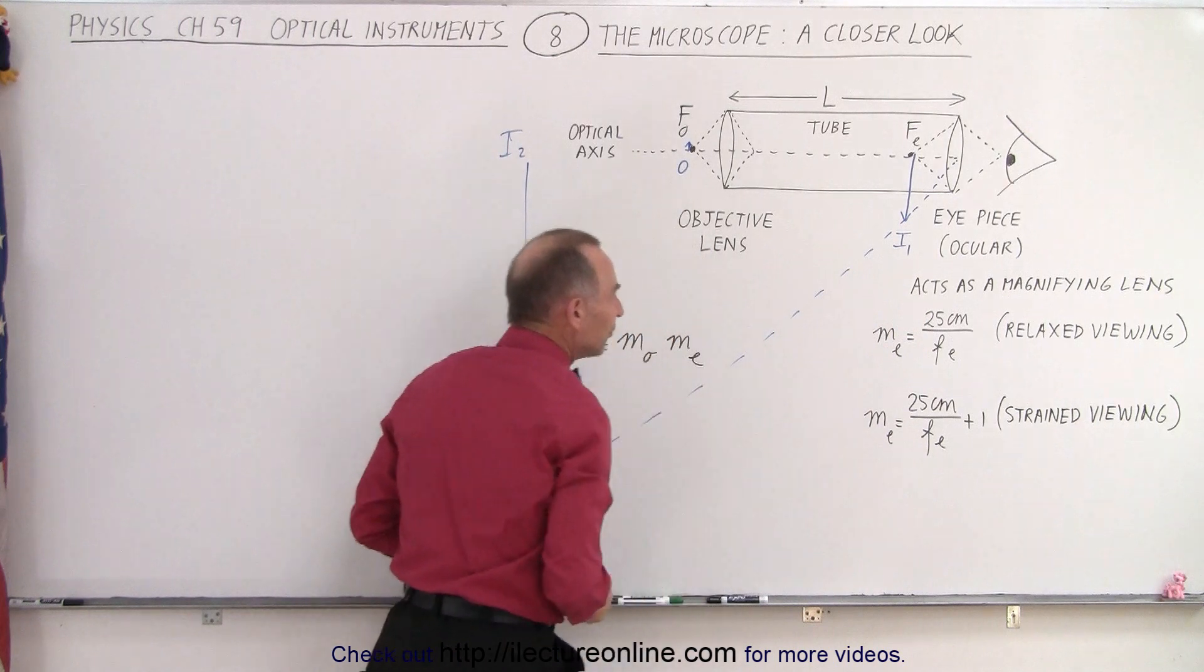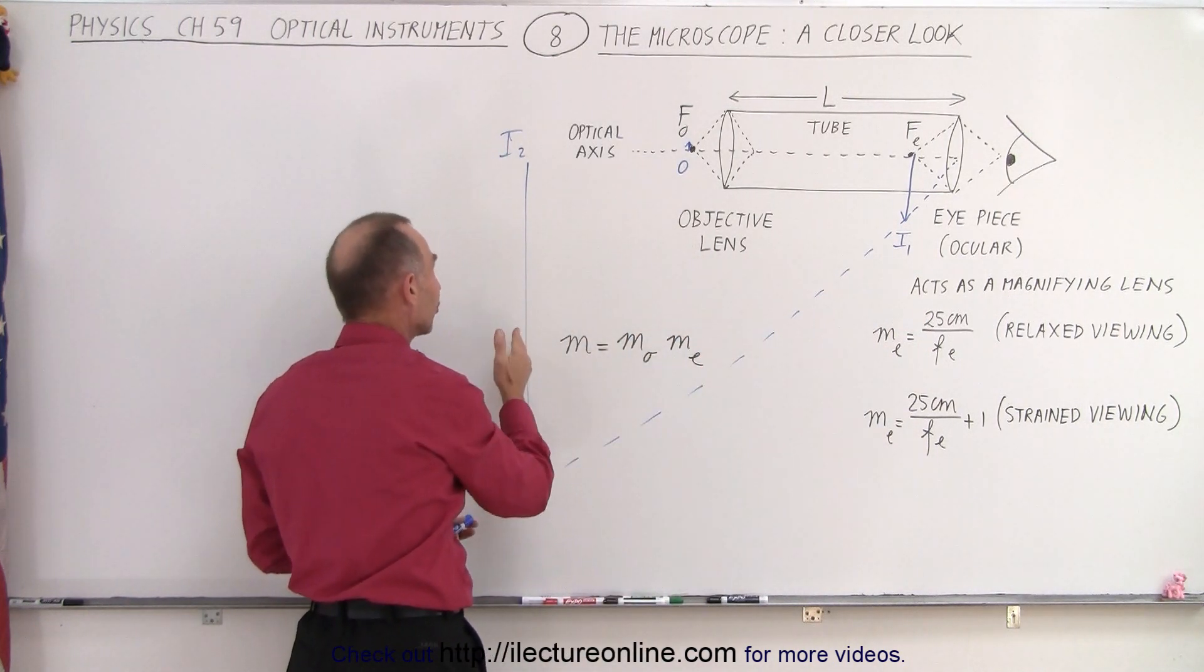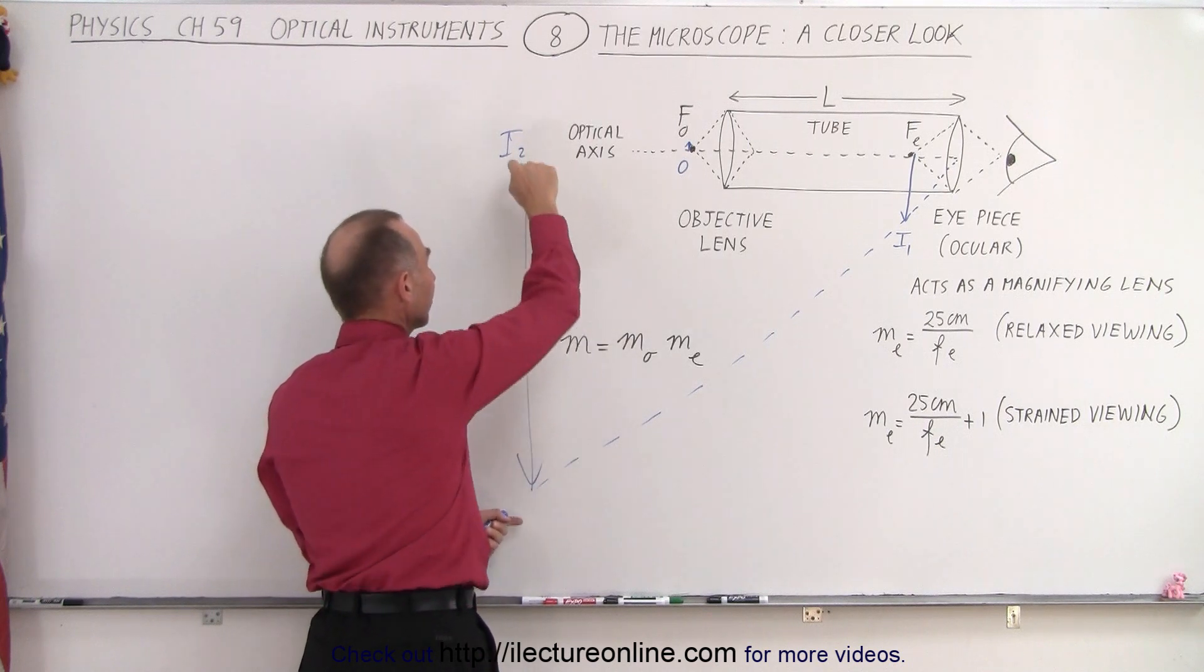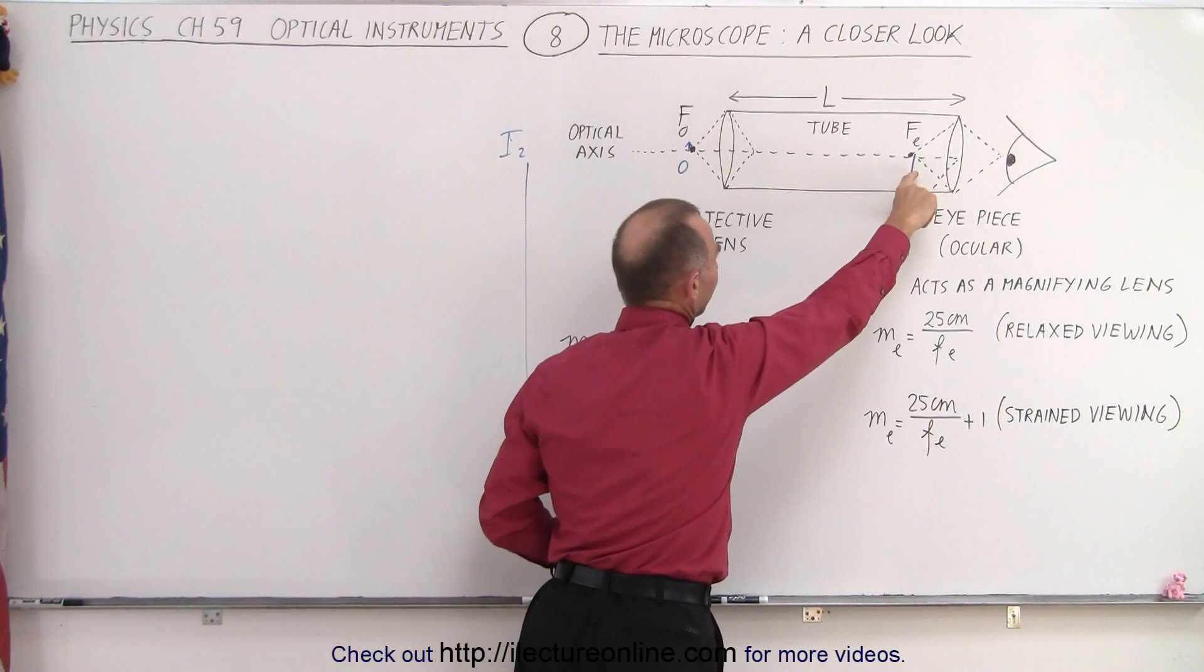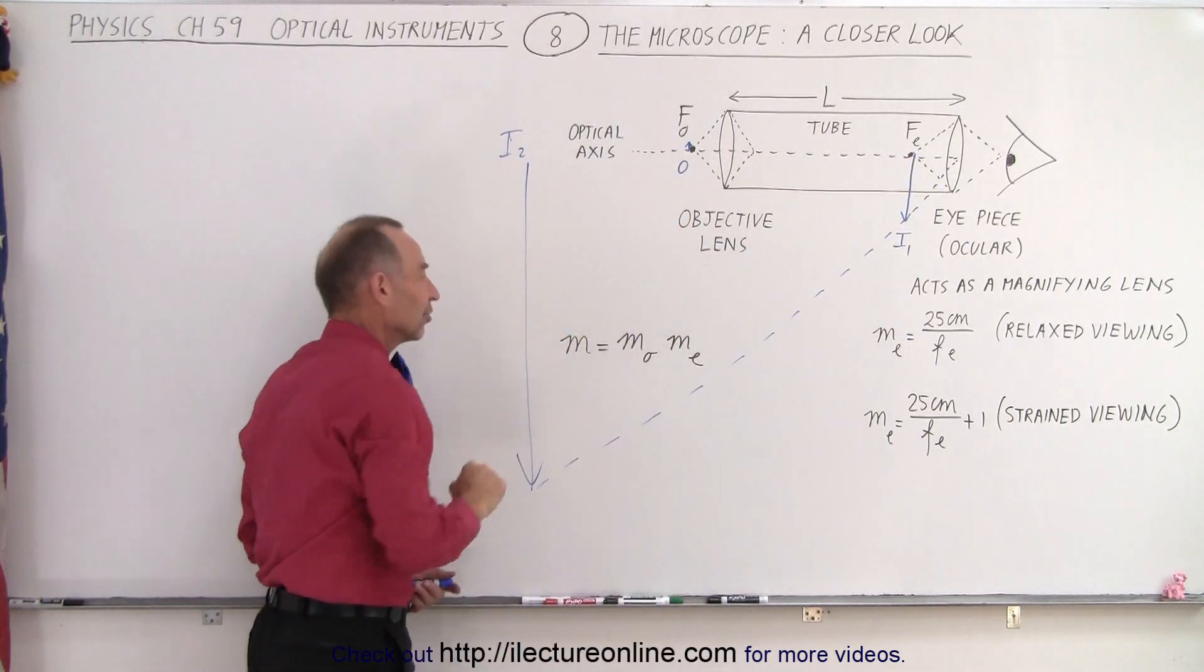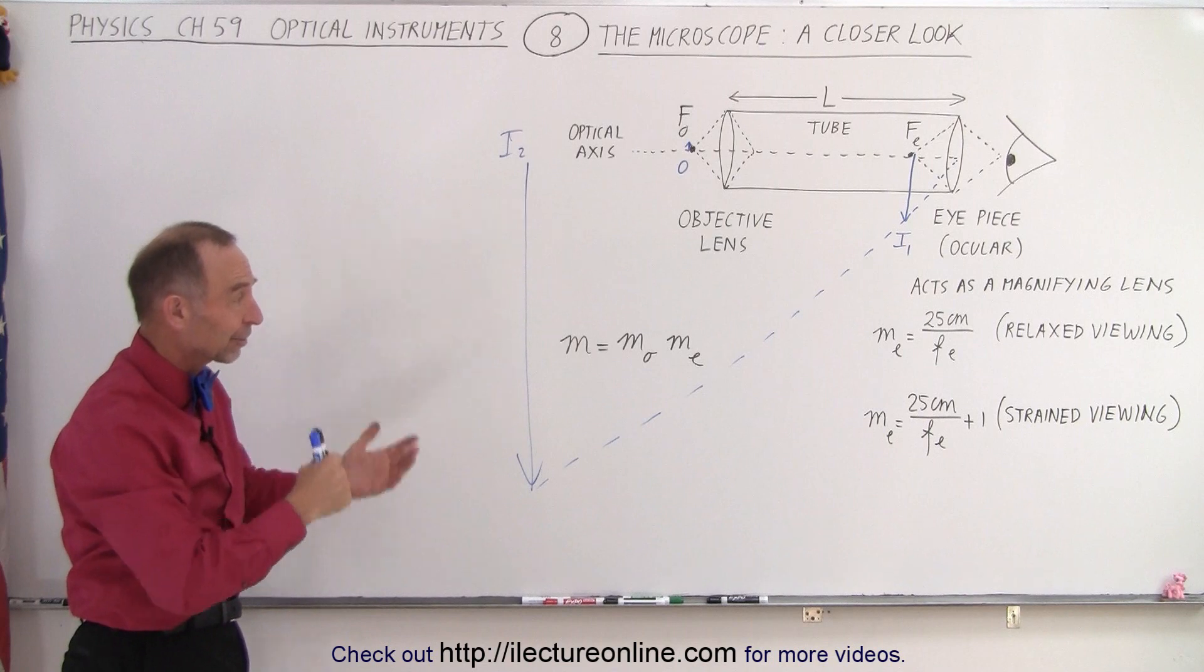Depending upon which way we view, either through relaxed viewing or strained viewing. And so there's your final image. And the magnification of the final image is simply equal to the magnification caused by the first lens, times the magnification caused by the second lens. And so that's how a microscope works.